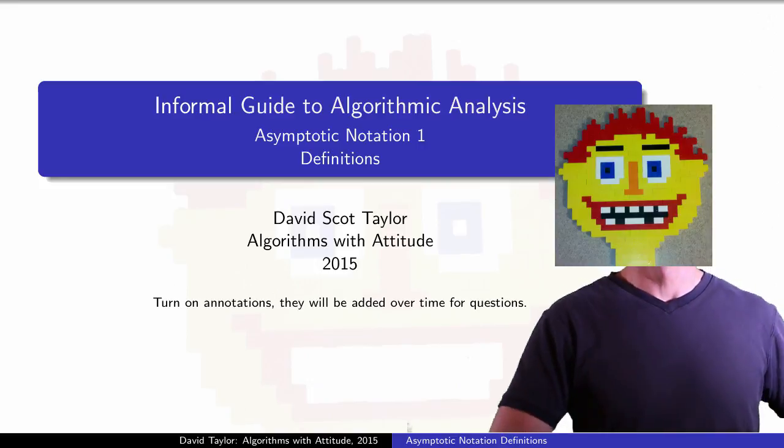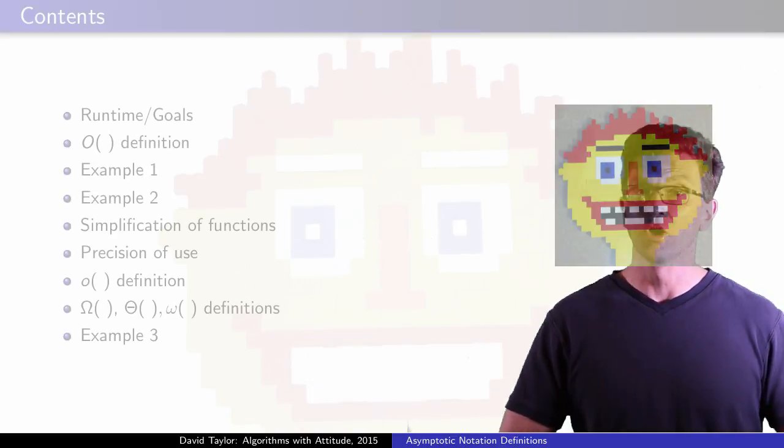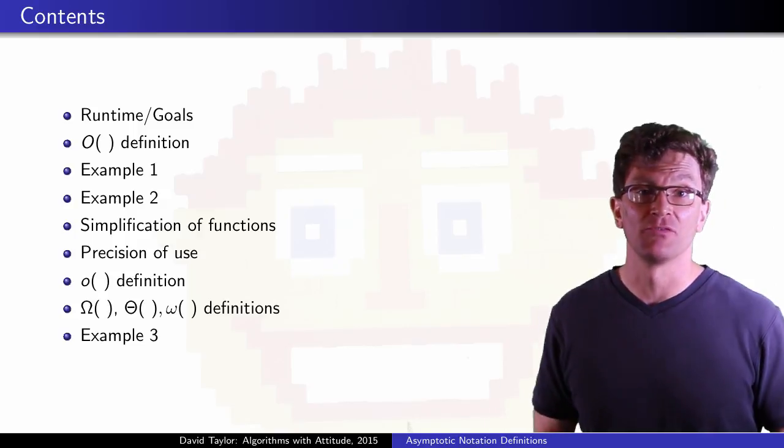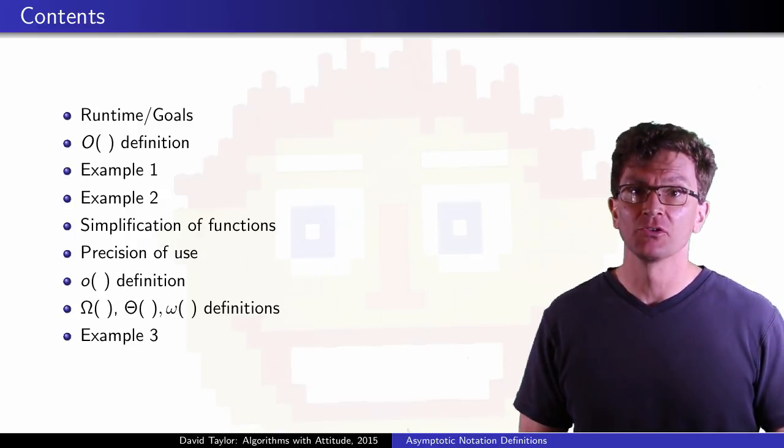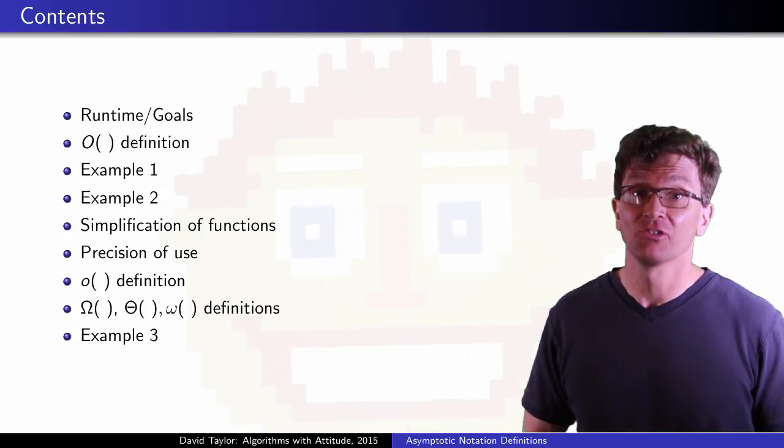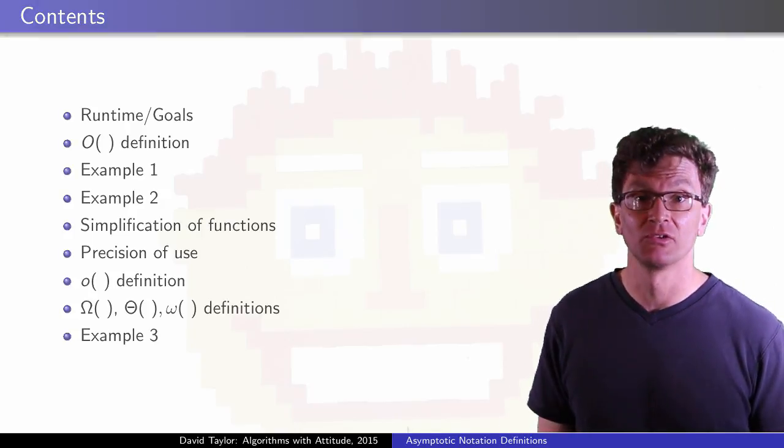This video is about asymptotic notation definitions. We start talking about runtime, give the big O definition, a couple of examples, see how it is used, and then give more asymptotic definitions with one last example.